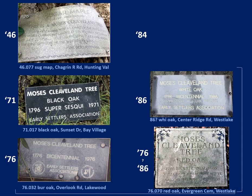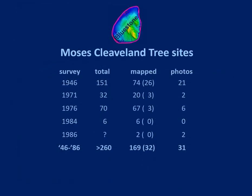Recording and publishing tree sites is better. Here is a basic Moses Cleveland trees data table by survey year. I have evidence for 261 trees — there are more out there, and we will find out. The mapped column has two totals: those put on a map by any means, and those in parentheses by Cartesian coordinates. About 30 sites currently have coordinates, and about 30 sites have photographs — that is about 12% in each case. Not good. For 2021, we need to up the numbers for coordinates and photographs.